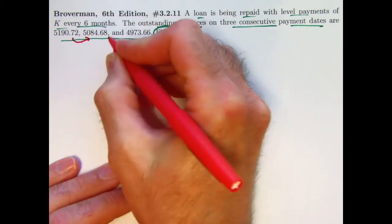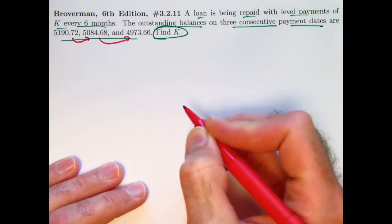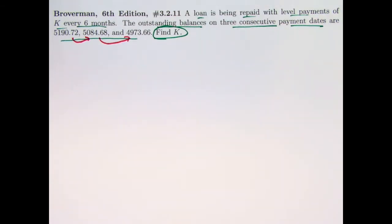Maybe it'd be good to first figure out the principal reduction in each of these periods. Actually, the fact that it's six-month periods is not really relevant. You're not really going to need to use that fact here.